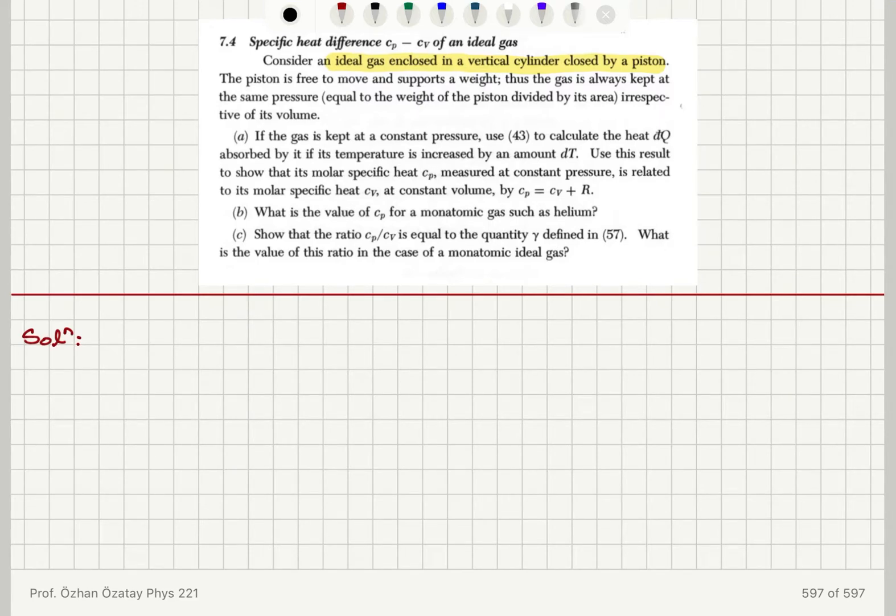Use this result to show that its molar specific heat measured at constant pressure is related to its molar specific heat at constant volume, Cp is Cv plus R. What is the value of Cp for a monatomic gas such as helium? And show that the ratio Cp over Cv is equal to the quantity gamma. What is the value of this ratio in the case of a monatomic ideal gas?